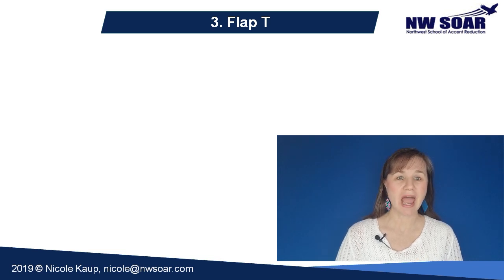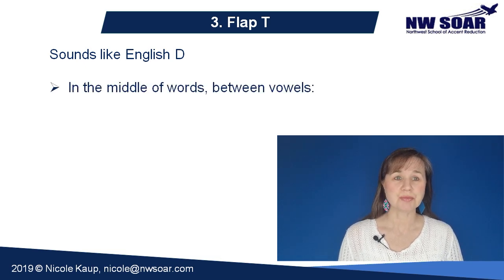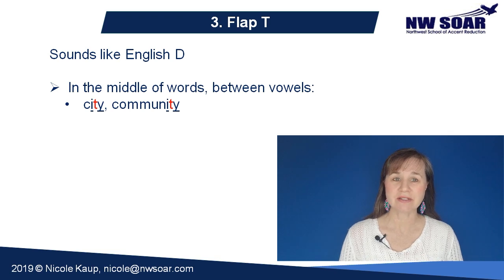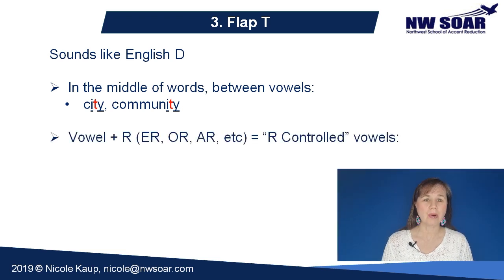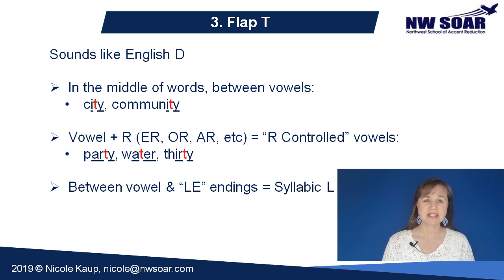The third variation is the flap T, sometimes spelled TT. This is the T that sounds like an English D. You will generally find it in the middle of words, since it occurs before vowel sounds in words like 'city' or 'community.' Do you hear that D sound? It's not 'city,' it's 'city' — sounds like a softer D sound. A vowel followed by the letter R is also considered a vowel sound, like 'er,' 'or,' or 'are.' So you'll find the flap T there also in words like 'party,' 'water,' and 'thirty.' The flap T also occurs before LE endings because of the syllabic L. Listen for it in words like 'little' or 'Seattle.'